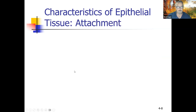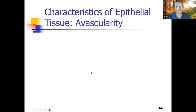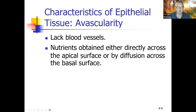Another characteristic is attachment: the basal surface is bound to a thin basement membrane. Avascularity — 'a' means without, vascularity means tubes — so no blood vessels in this tissue. Nutrients are obtained either directly across the apical surface or by diffusion across the basal surface. Blood vessels are near these cells but don't penetrate directly; all oxygen and nutrients come through diffusion up from underlying tissue, which does have blood vessels.